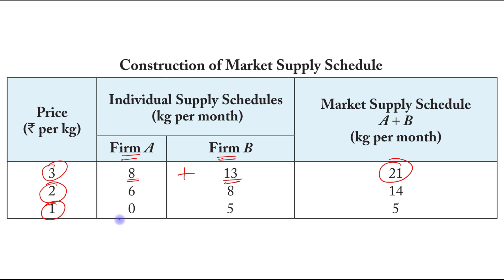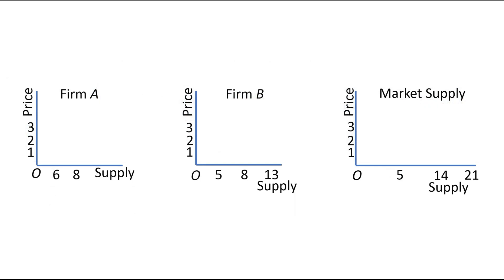Now we will plot the supply schedule of the individual firms — Firm A and Firm B — and then the market supply schedule. Starting with Firm A: at a price of one, Firm A is supplying 0 units; at a price of two, Firm A is producing 6 units; at a price of three, Firm A is producing 8 units. We join these combinations and this is the supply curve of Firm A.